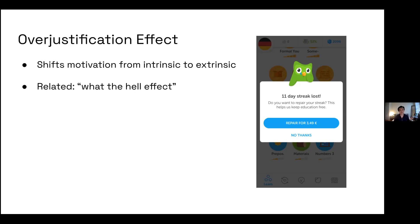Duolingo made a similar mistake. Originally they were very intrinsically motivated, but once they added streaks and external rewards, when people lost that streak they didn't really want to continue learning — like, what's the point? This is actually the legitimate term for it: the 'what the hell effect.' It's very common in dieting — you're doing really well, then you accidentally eat a cupcake, and you're more likely to break your diet further and get fries and ice cream because you've already broken your streak.